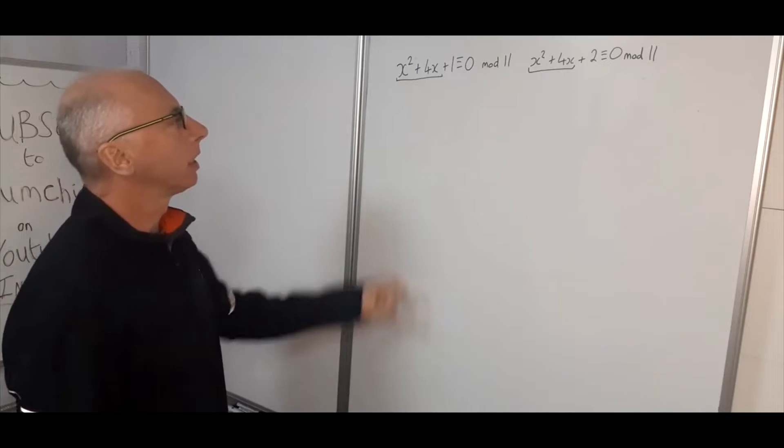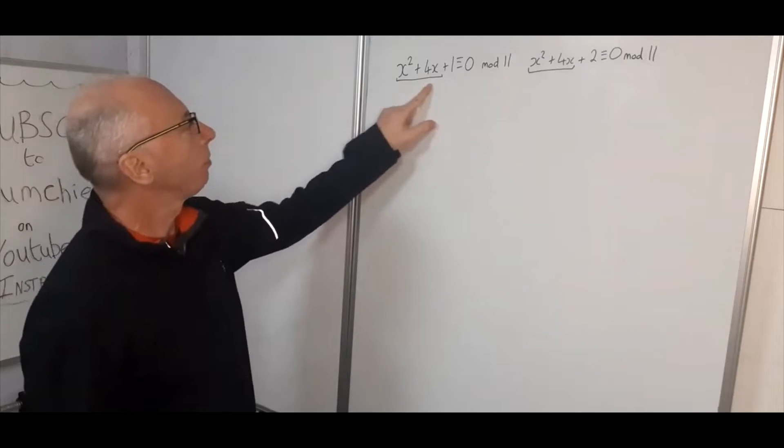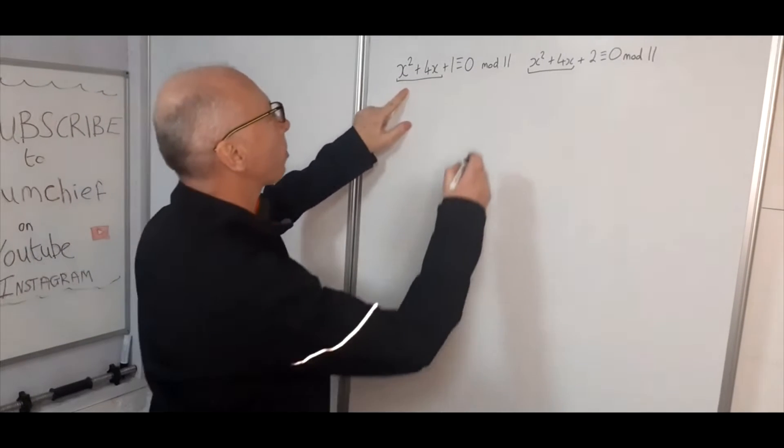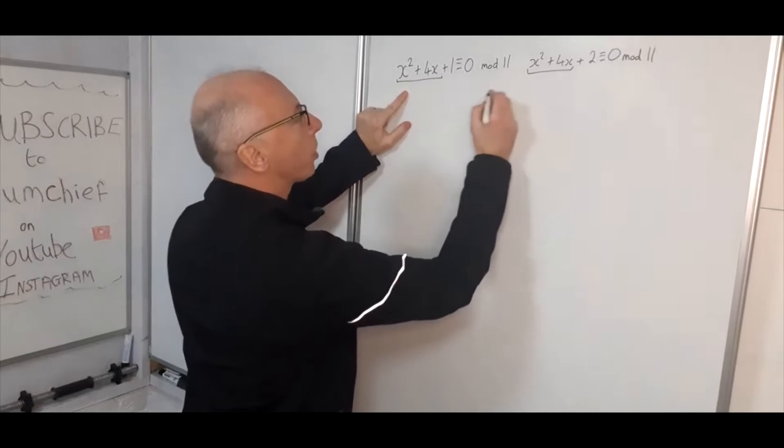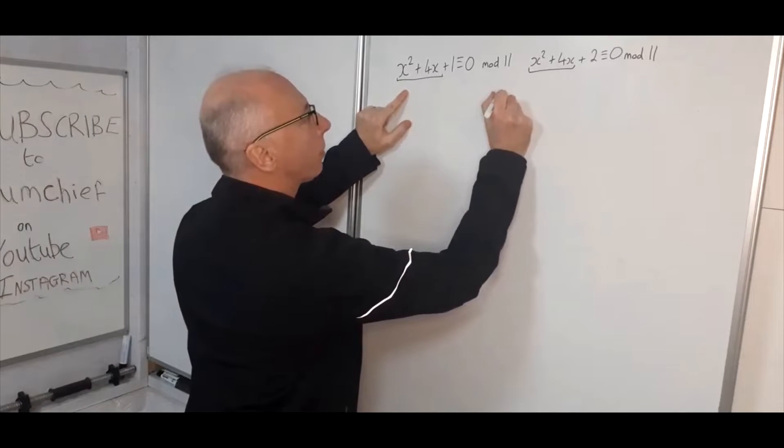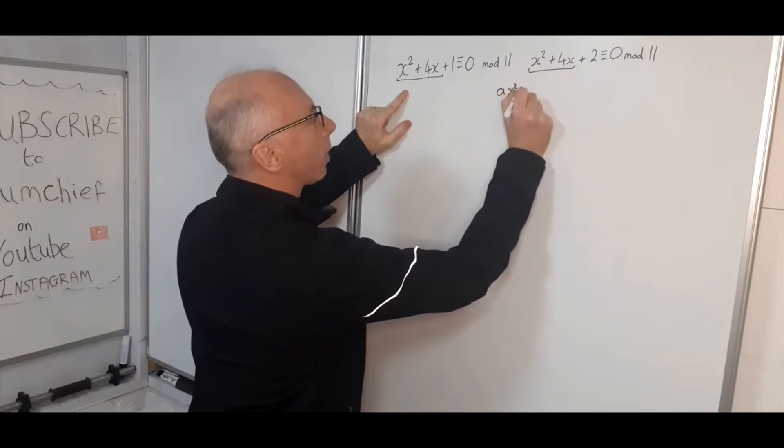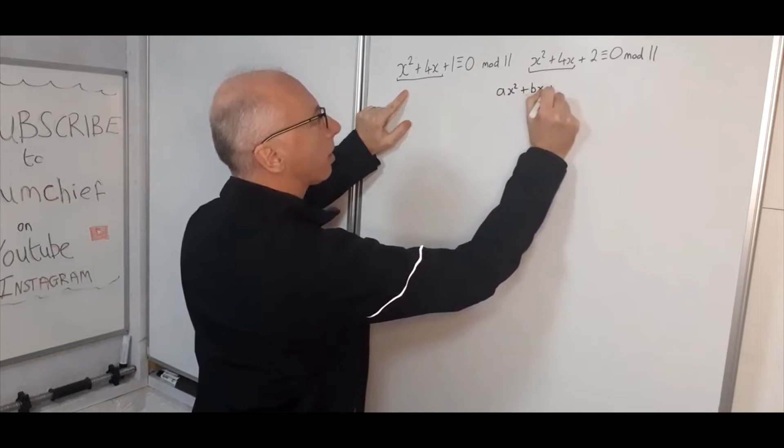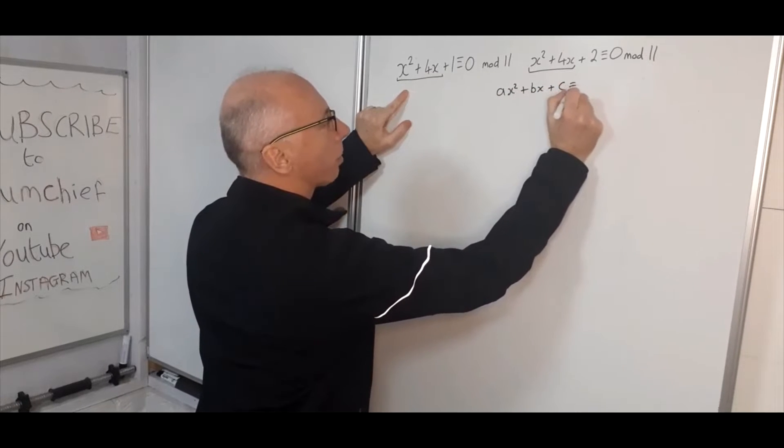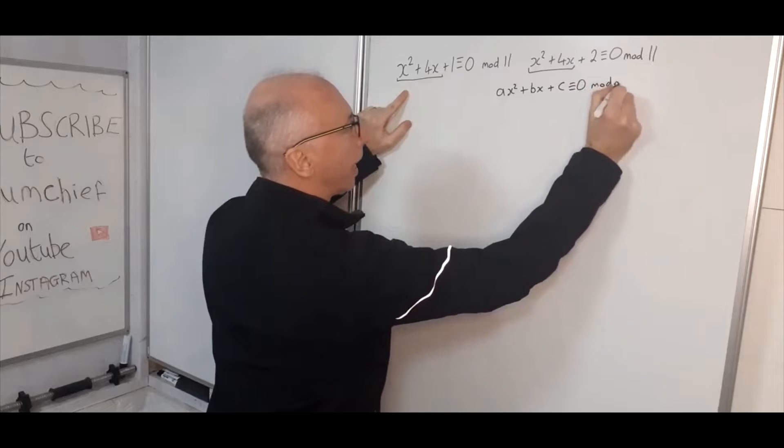Okay so let's just have a look at the quadratic here so x squared plus 4x plus 1 and x squared plus 4x plus 2. All quadratics are in the form of ax squared plus bx plus c and that's congruent with 0 modulo n.